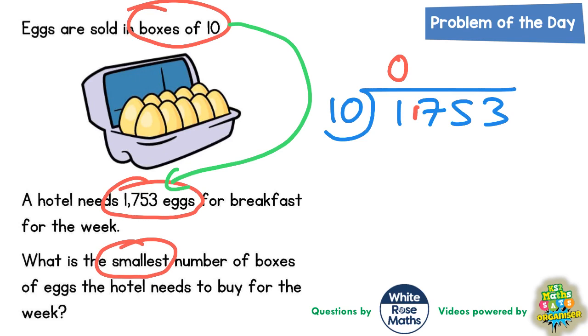10s into 17 goes once, that's 10, and there's 7 left over. So carry the 7 across to make 75. How many 10s into 75? Well, 7 tens are 70.